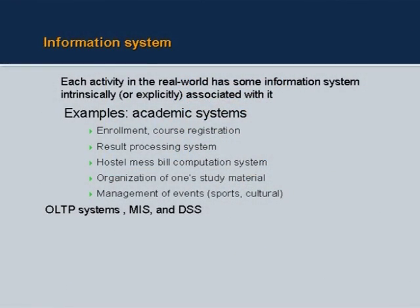Normally each activity in the real world has an associated information system, whether we realize it or not. For example, attending this course — you are taking down notes, will prepare a set of notes, and know you have to attend a lab. Modern information systems for businesses have to be built explicitly by design. When you conglomerate all individual system requirements — such as enrolment and course registration — you talk about a corporate or enterprise-wide information system.